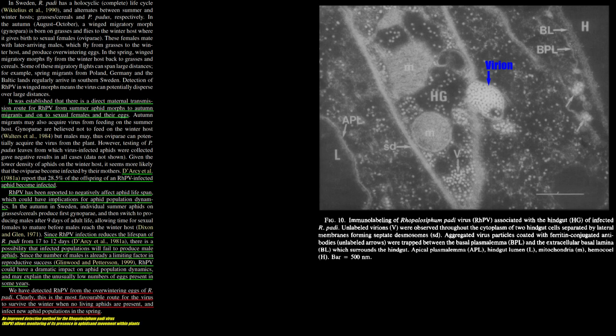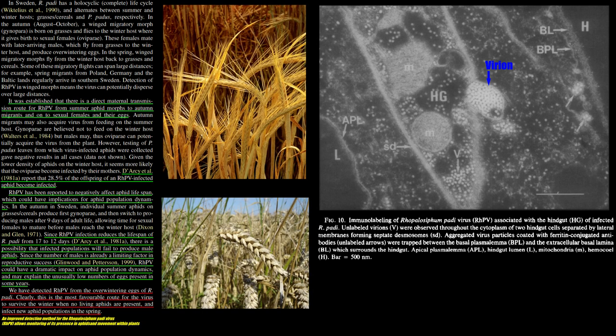Once infected, the aphid's posterior midgut and hindgut lose cytoplasmic organelles, such as the endoplasmic reticulum and ribosomes. RHPV can systemically colonize barley and oat plants within a week and infect aphids feeding on directly unrelated tissues. However, it does not stay infective indefinitely, ceasing to be infectious after three weeks in one experiment.